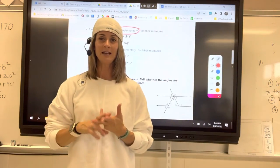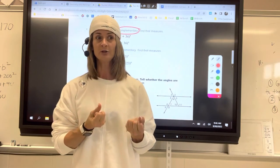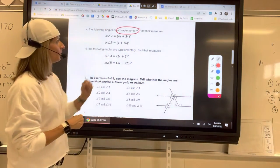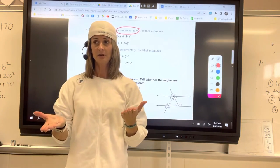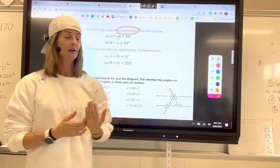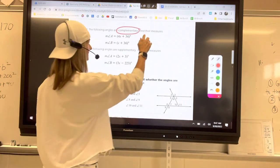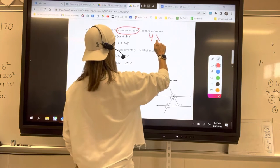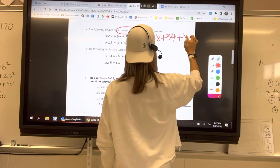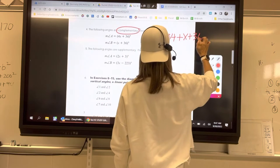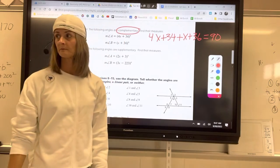Complementary angles. Two angles that add up to 90 degrees are complementary. You have to know that when you see the word complementary. So what this is telling you is that these two angles, when you add them together, equal 90 degrees. So that's how you write your equation. We could draw a diagram if we want to, but all we really need is 4x plus 34 plus x plus 36 adds up to 90 degrees. Good.